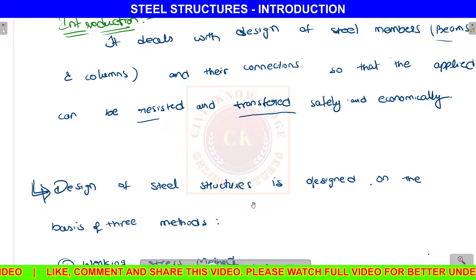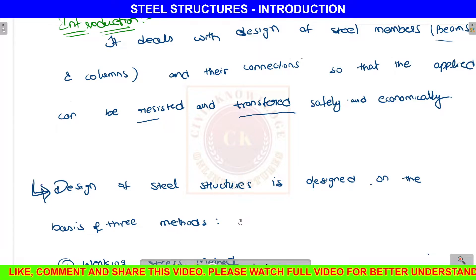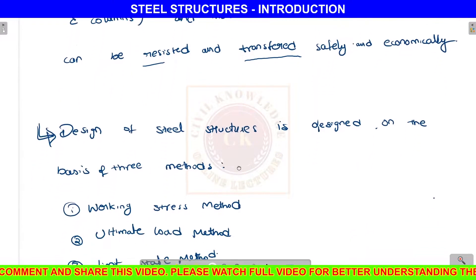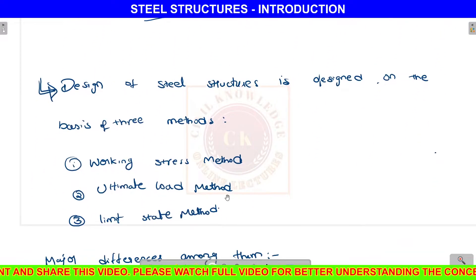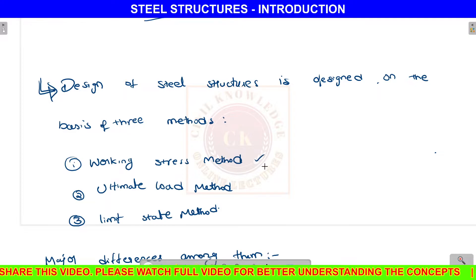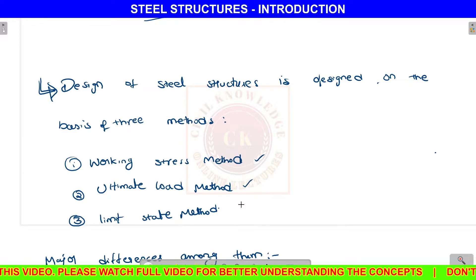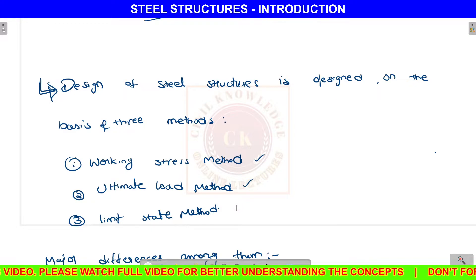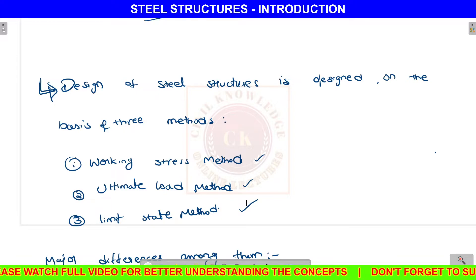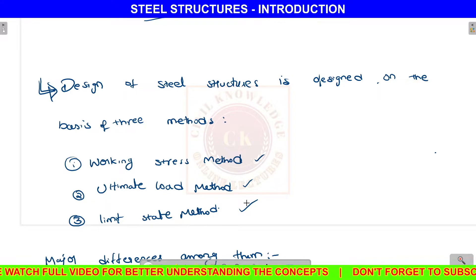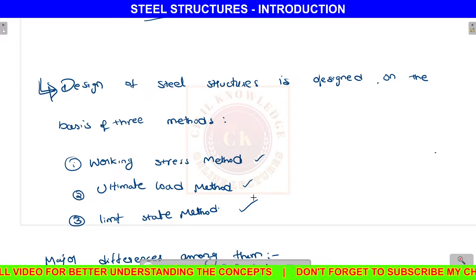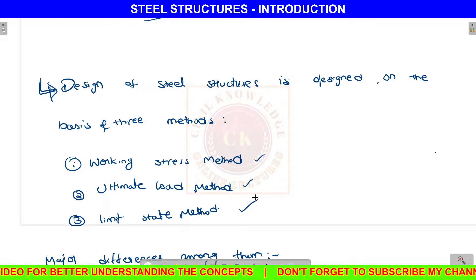The design of steel structures is based on three methods: first is the working stress method, next is the ultimate load method, and next is the limit state method.